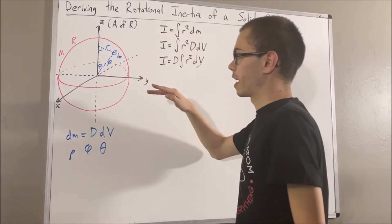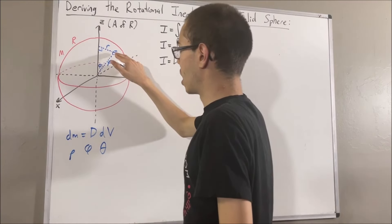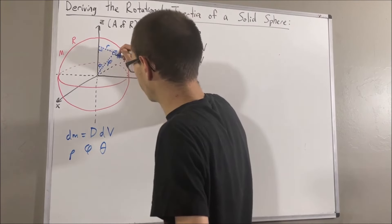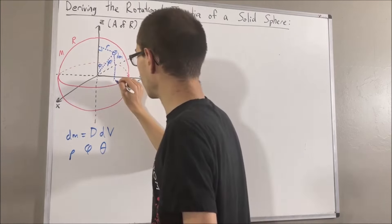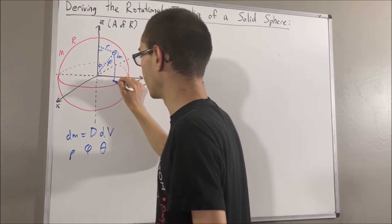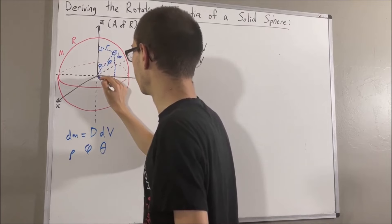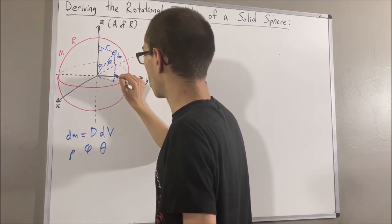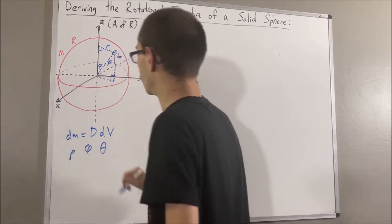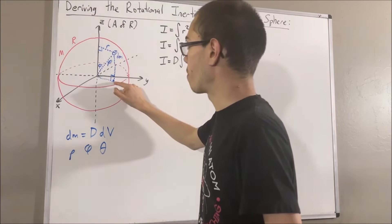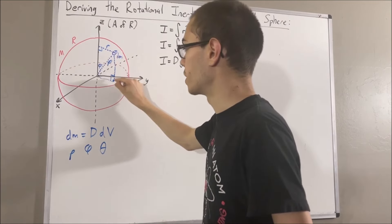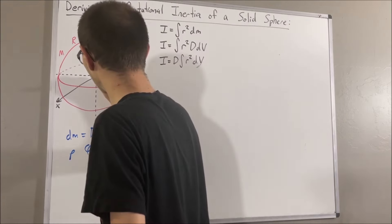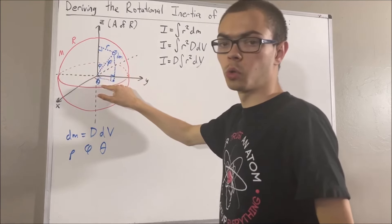To project our differential mass onto the xy plane means we draw a dashed line from dm down to the xy plane. I'll indicate the intersection with the xy plane and draw a line from the origin to that intersection point. This dashed line is perpendicular to the xy plane, and that intersection point represents the projection of our differential mass. Theta is this angle. So these are all three spherical coordinates.